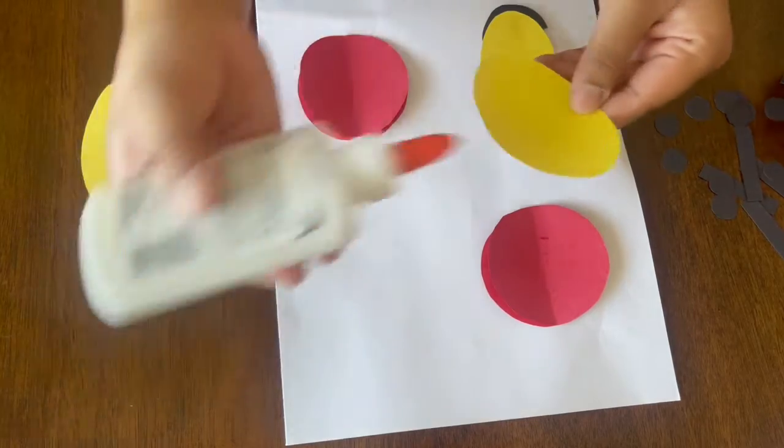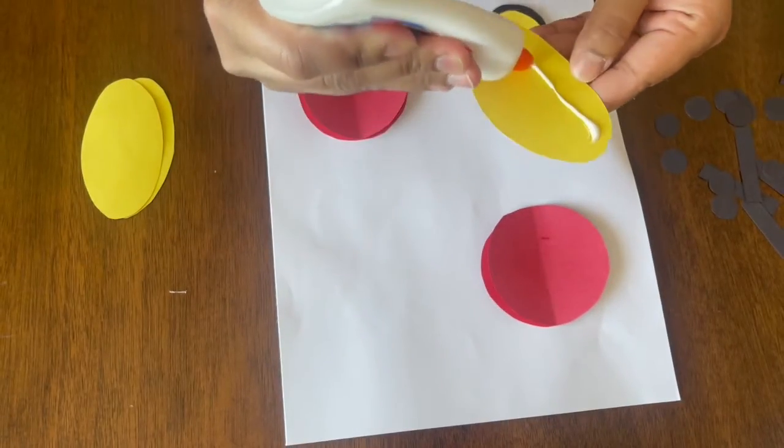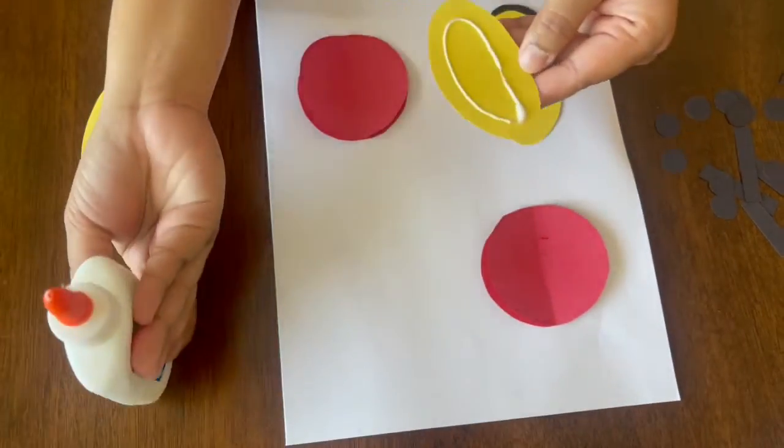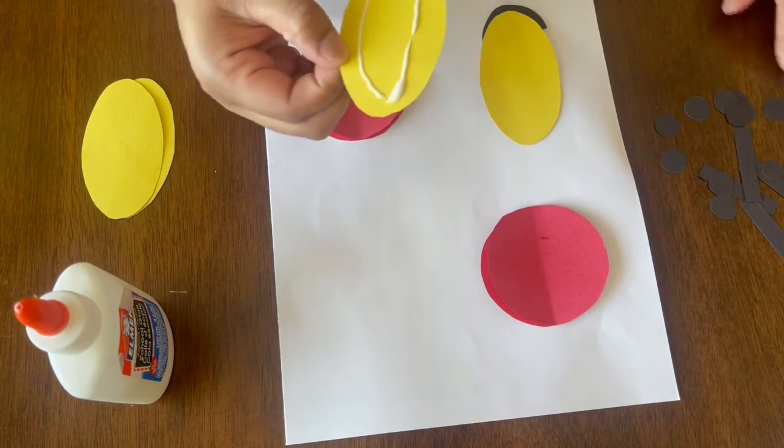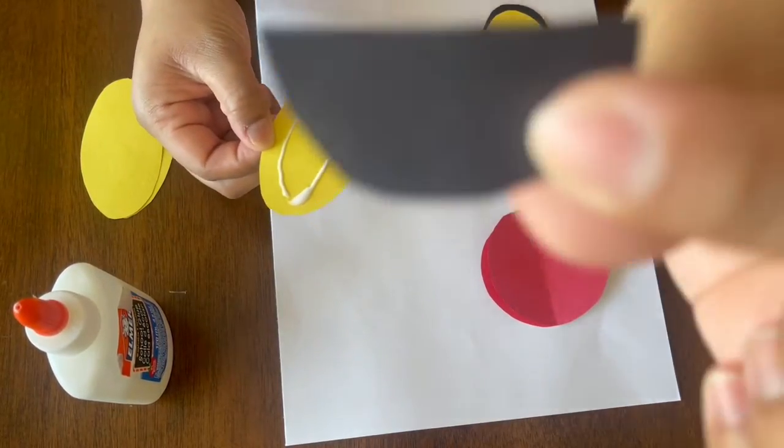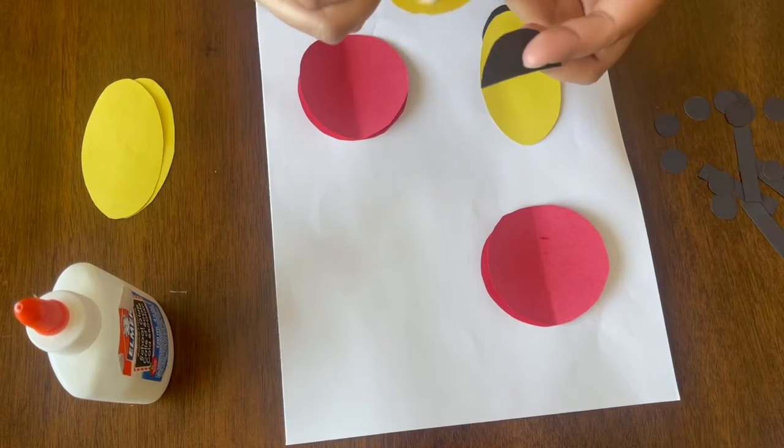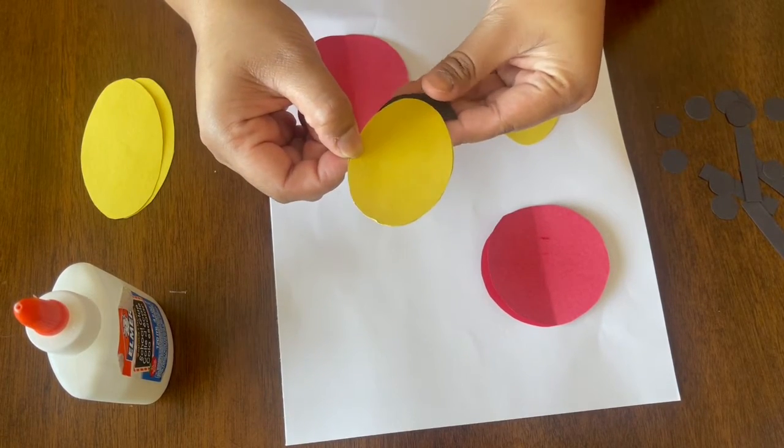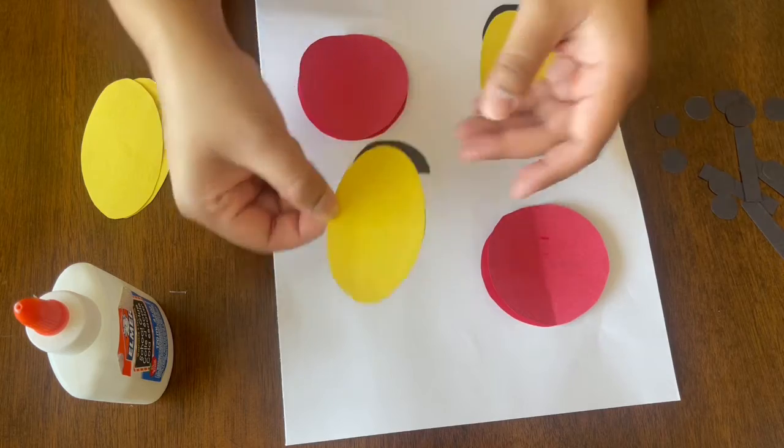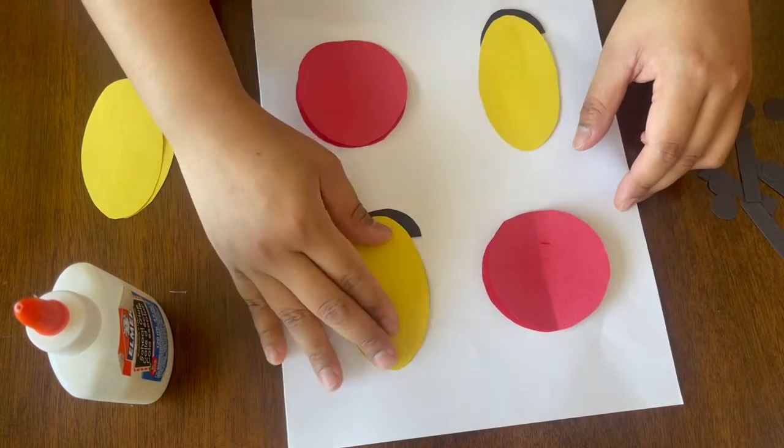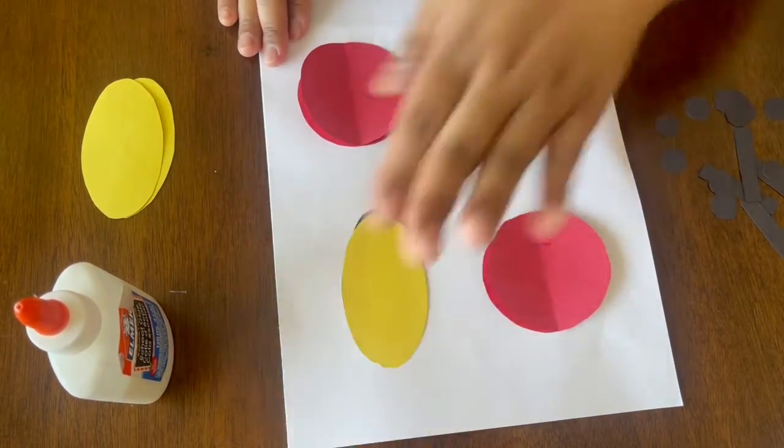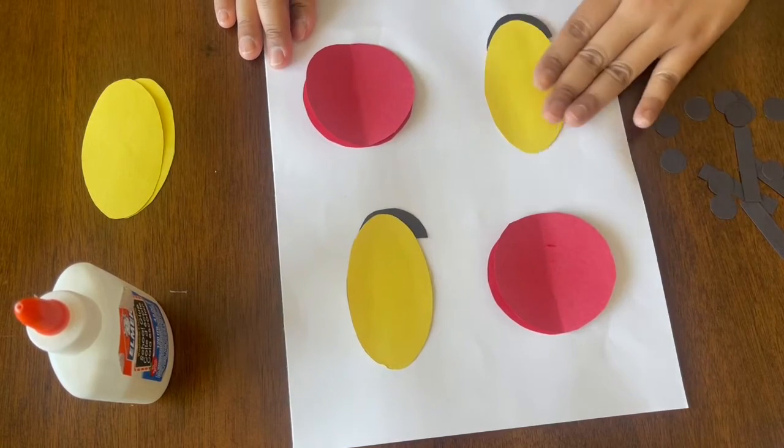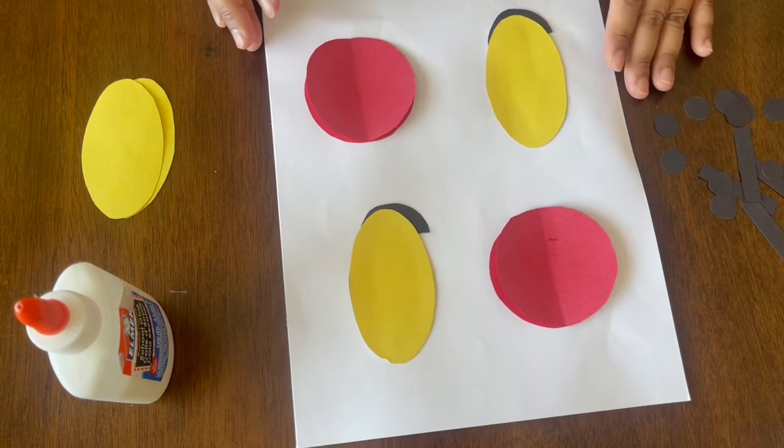So you guys are supposed to have it like this. This will serve as your butt for the other bug. We're going to do the same to the other one. Let's put glue. Get your crescent shape again, the black one. And then put it like this. And again, stick it. Press it a little bit.